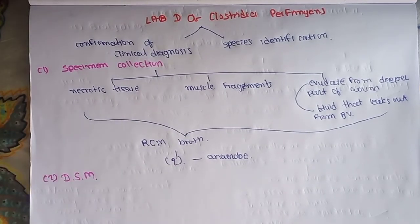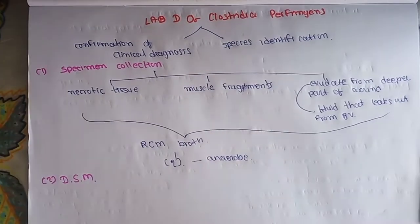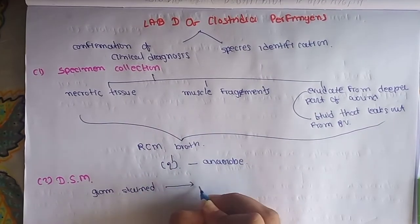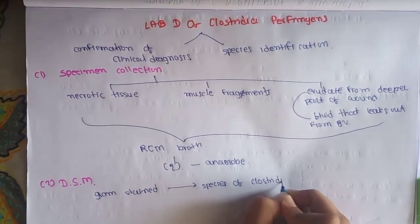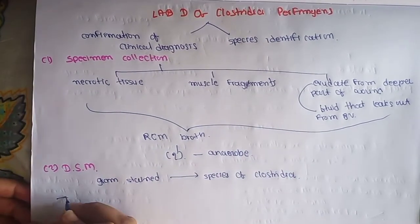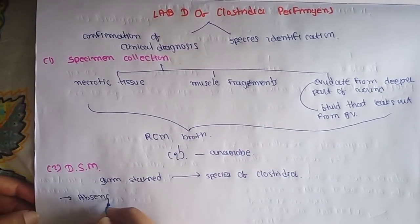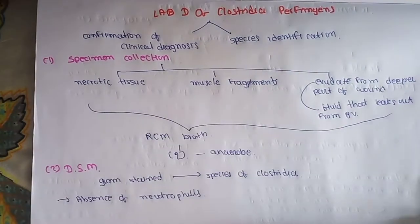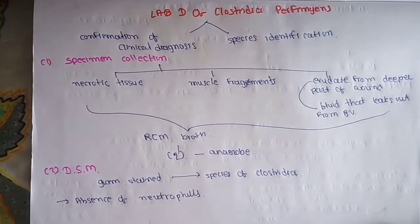The second method is direct smear microscopy. Gram staining provides the clue about which species of Clostridium is present here, and the absence of neutrophils in infected tissue is the characteristic feature.